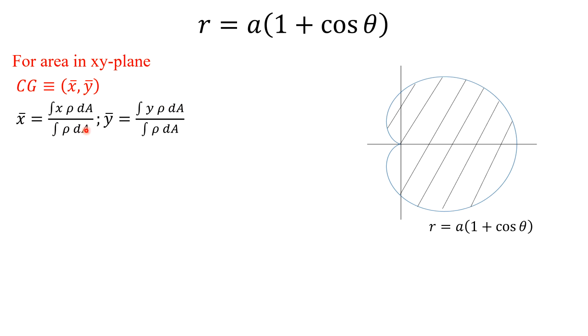As the density here is constant, as it is not mentioned, we'll assume that it is constant. Therefore this rho will get cancelled from numerator and denominator for both x bar and y bar. Now for this, as we have equation in polar form, area element dA will be r dr d theta.